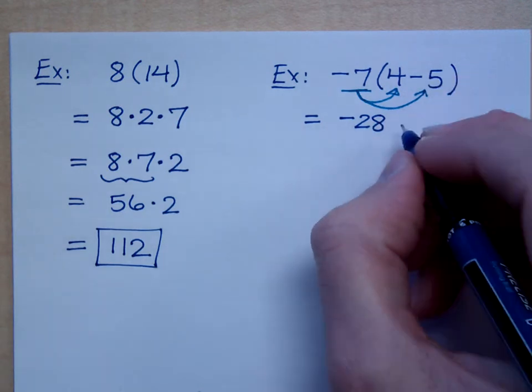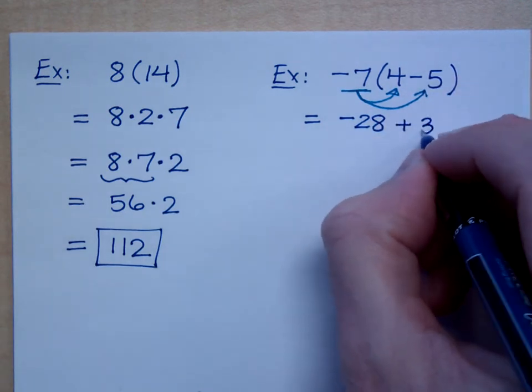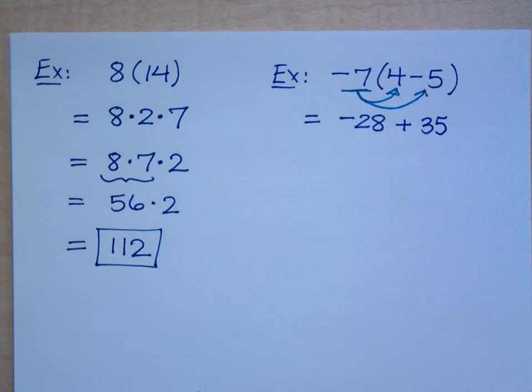Negative 5. Positive or negative? Positive. You have a negative 28 and a positive 35. What is your answer?